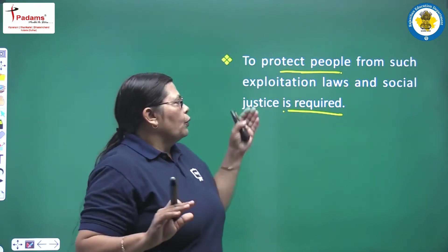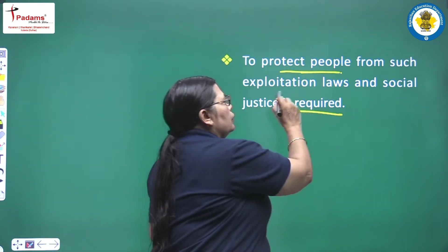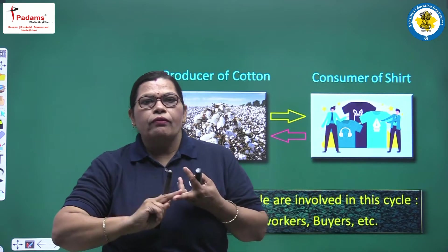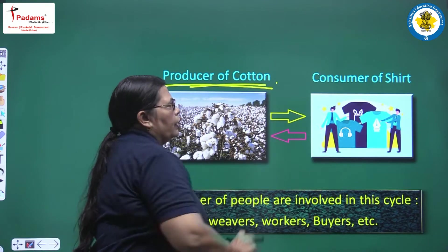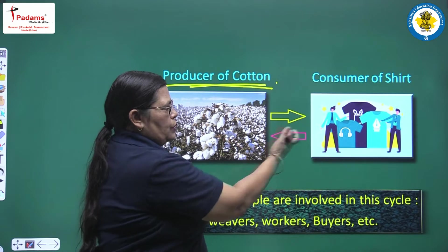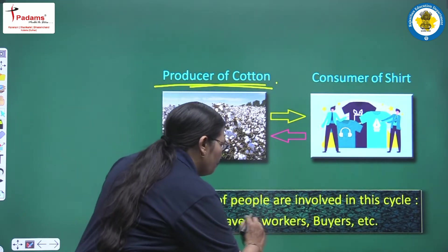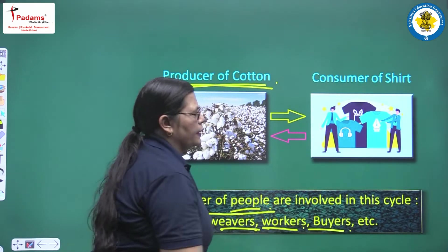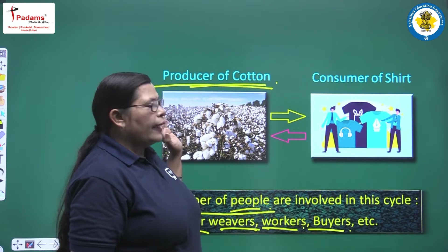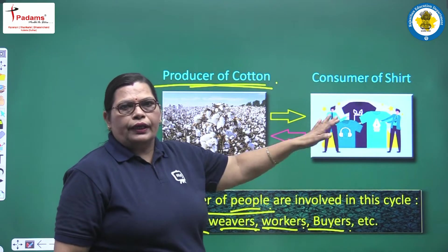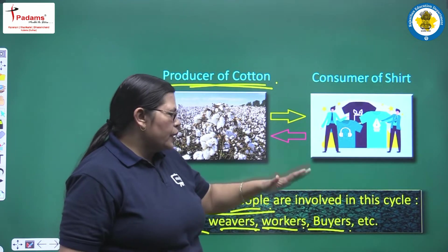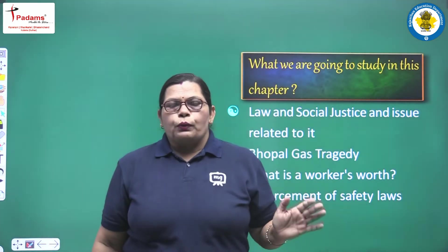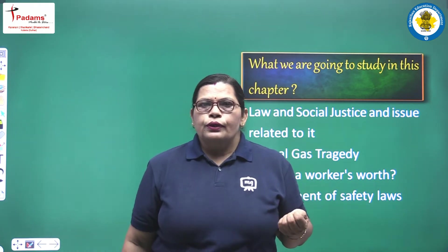So for protecting people from exploitation, we have an example here. Consider the producer of cotton or the consumer of the shirt. In this process many persons are involved — for example, farmers, weavers, workers, buyers, etc. It means a long chain from the agricultural field to the consumer. And at any place, with any person, if any exploitation is there, then social justice is also demanded at that time.